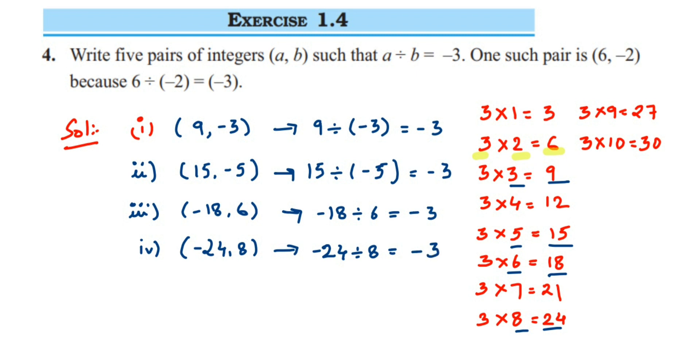The last one, you can take anything—27 and 9, or 30 and 10, anything. I'll take 30 and 10. The last pair is (30, -10). When you divide these two numbers, 30 divided by -10, you'll get the answer -3. This is very simple.